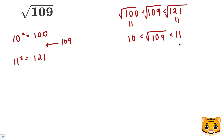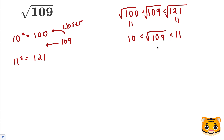Now we can see the square root of 109 is between 10 and 11. 109 is a little bit closer to 100 compared to 121, but it's fairly distributed evenly between them. So we can pick a tenths place decimal between 10 and 11 that's just a little bit closer to 10, to multiply by itself to give us about 109.